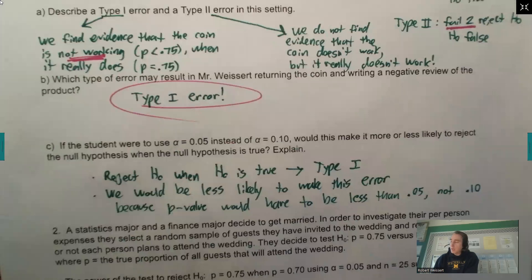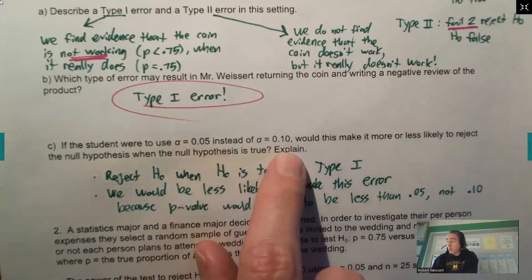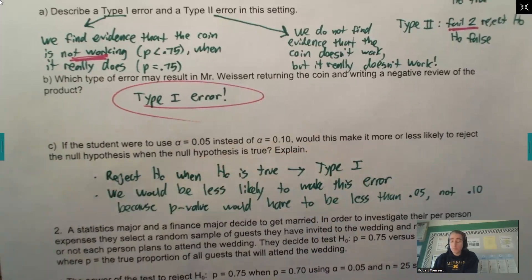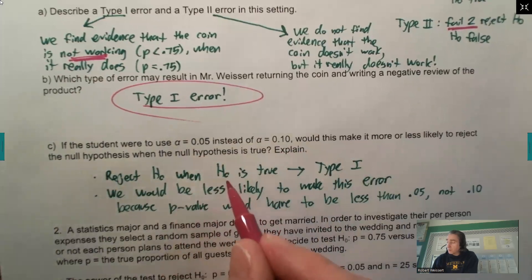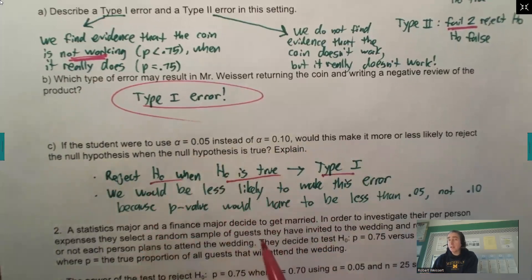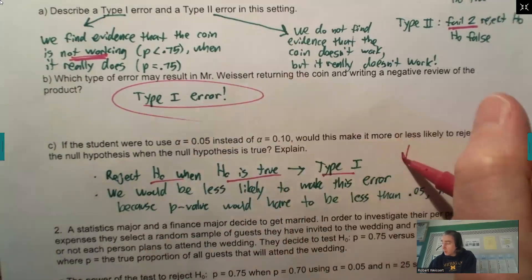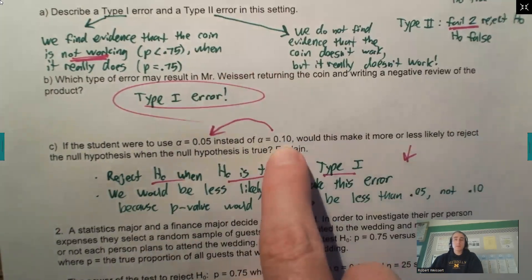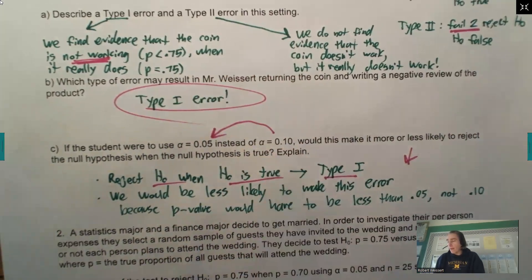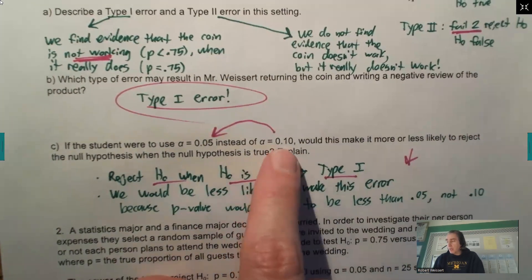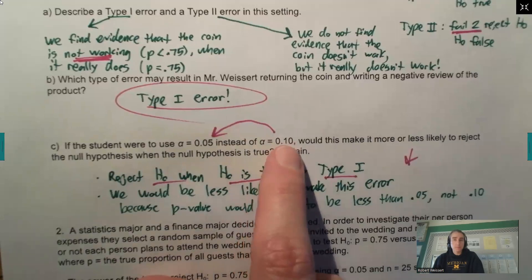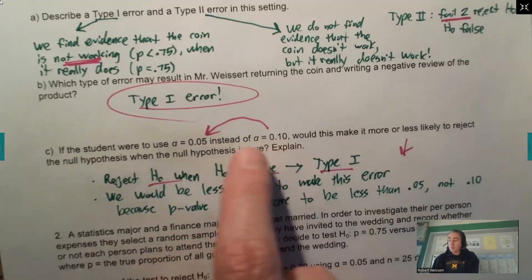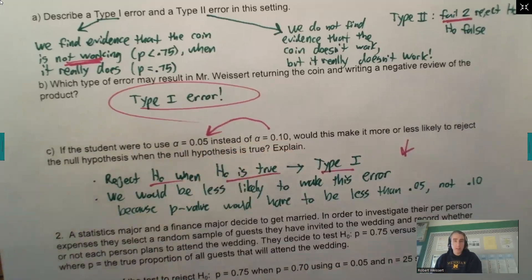If the student uses alpha 0.05 instead of 0.10, would this make it more or less likely to reject the null when the null is true? When we reject the null and the null is true, that's a Type 1 error. The likelihood of making a Type 1 error is going to decrease because alpha decreased — my probability went from 10% to 5% just by decreasing that alpha level.